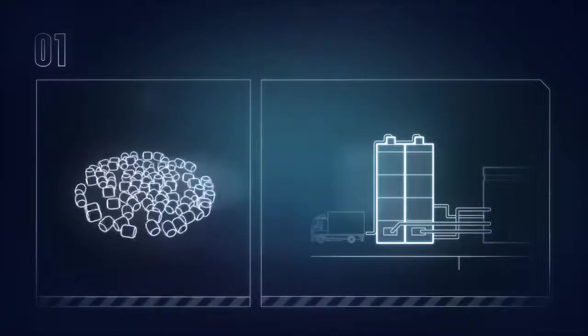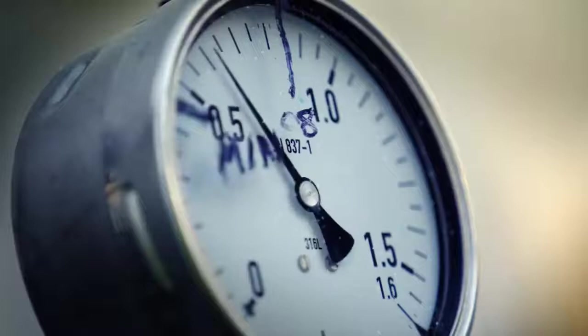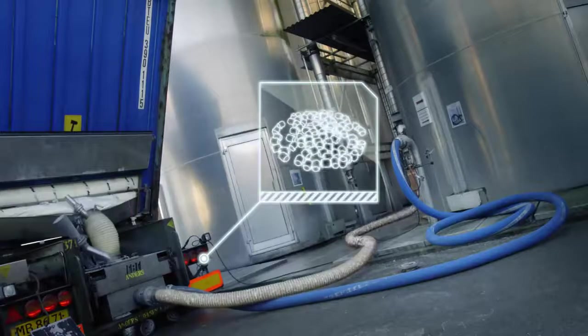A truck arrives with raw material at the factory. A truck like this holds up to 28 tonnes of plastic granulate. The granulate is blasted from the truck into tall silos where it is stored.